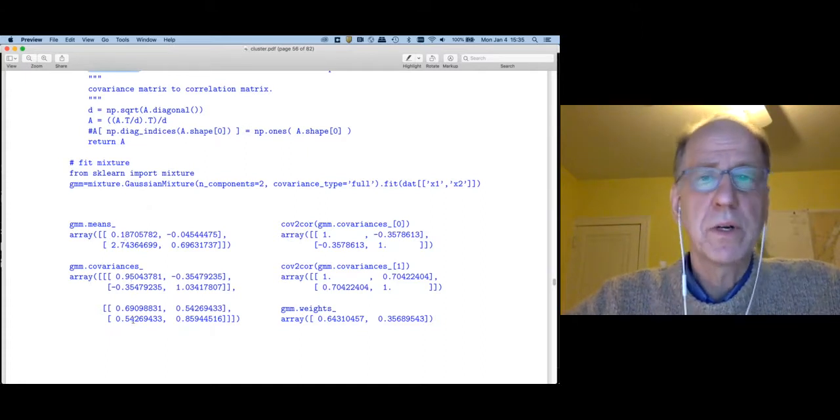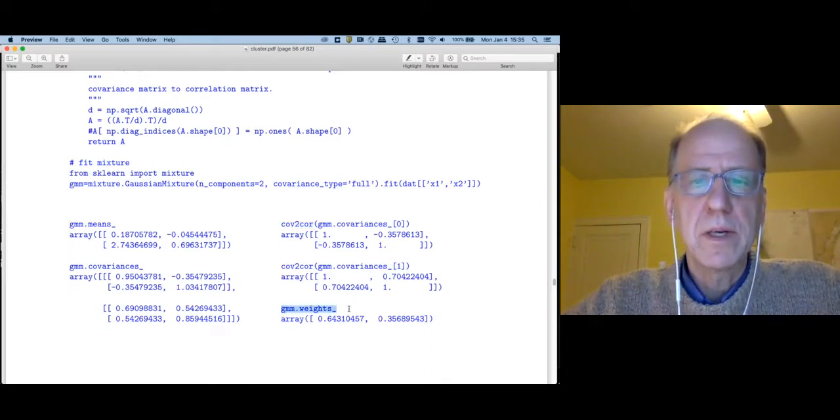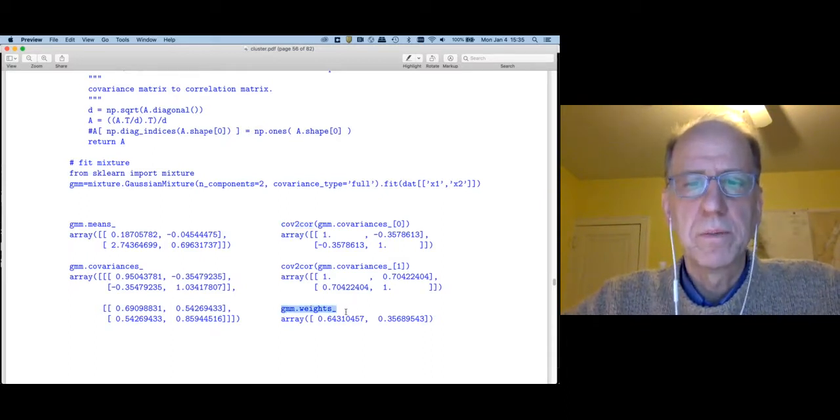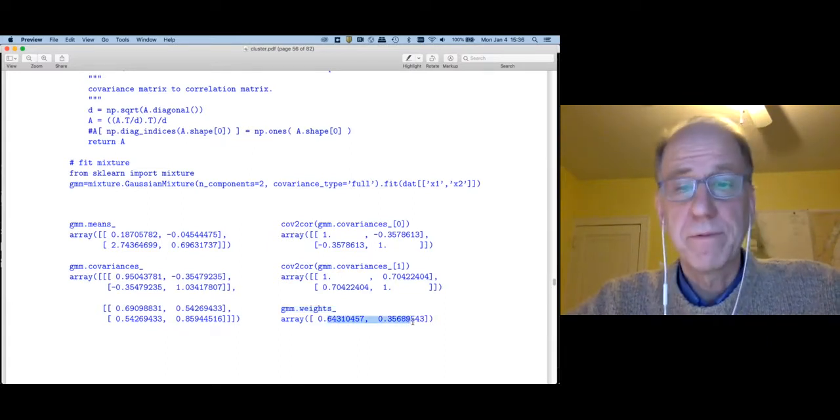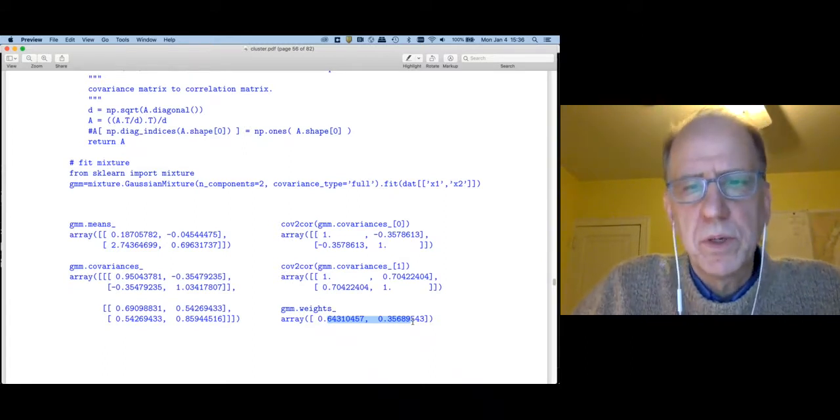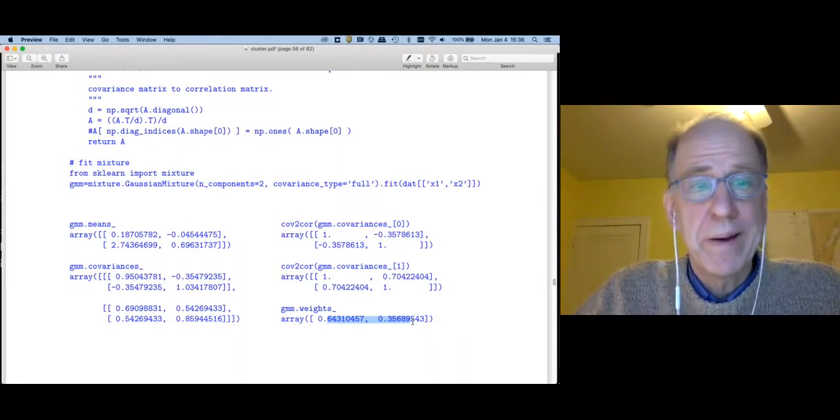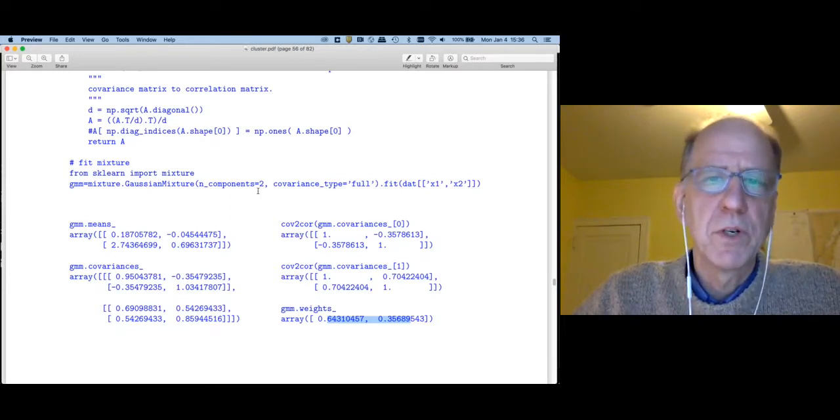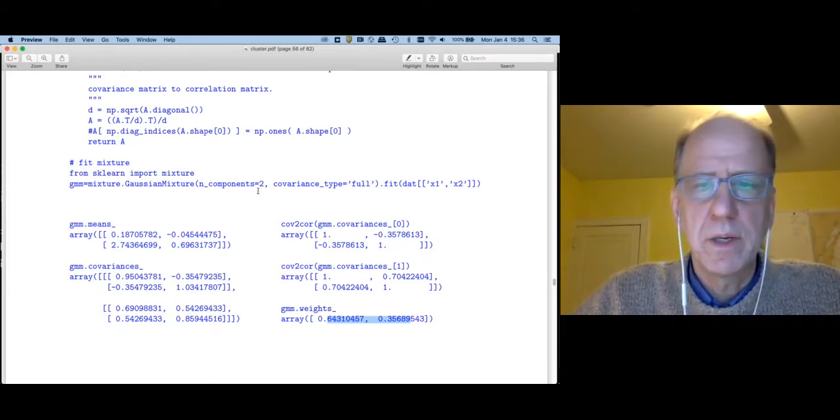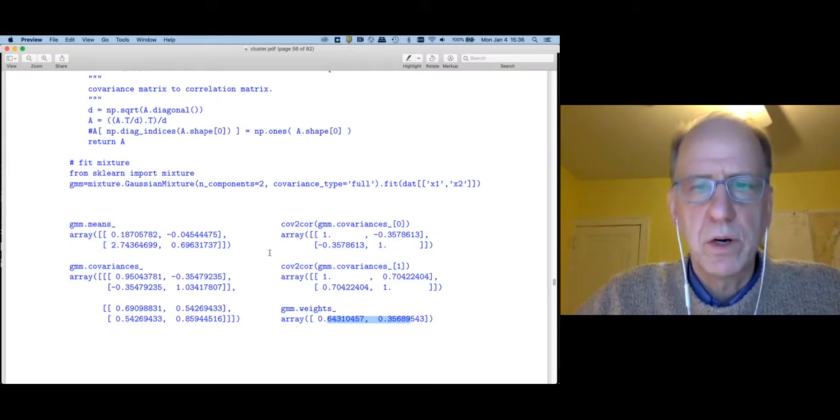We can do exactly the same thing in Python. Python doesn't have a cov-to-cor function, but it's easy enough to write one yourself. You get pretty similar estimates when you use the Python sklearn library. Here are the means. Here are the covariances. We can apply cov-to-cor to them. And then the Gaussian mixture weights are the priors. Notice these priors are substantially different than 0.5.